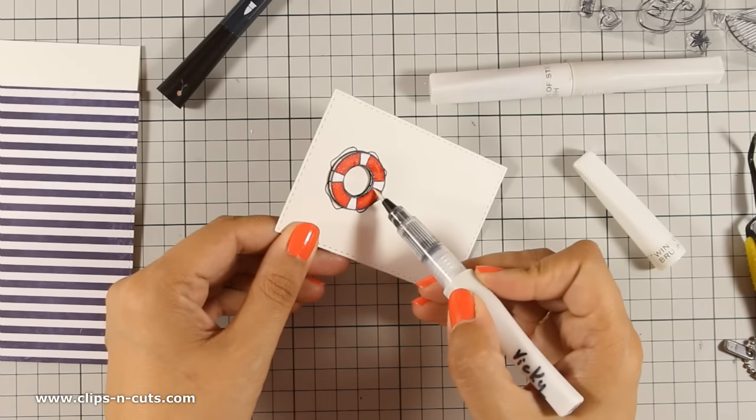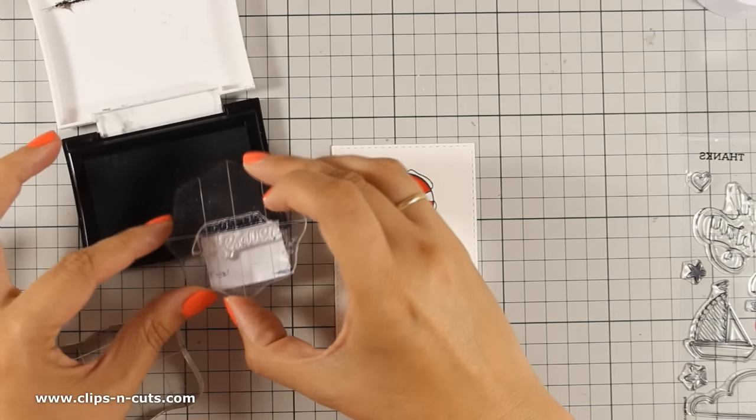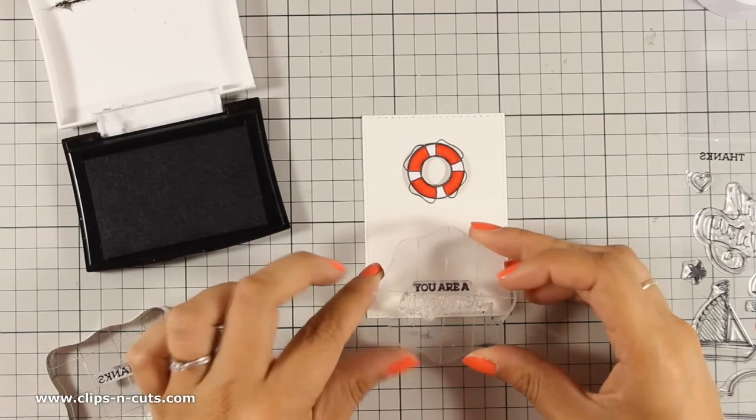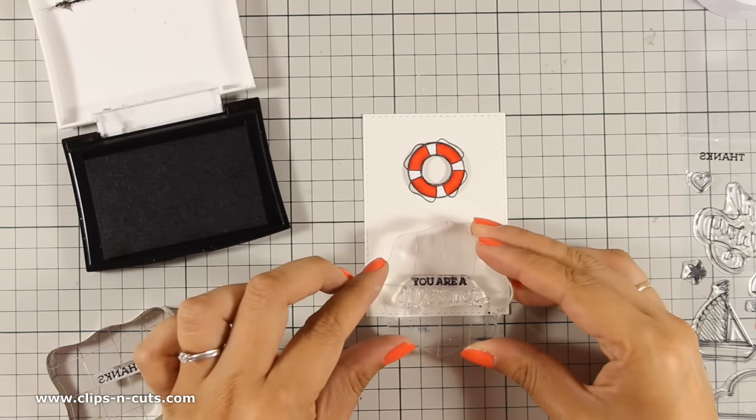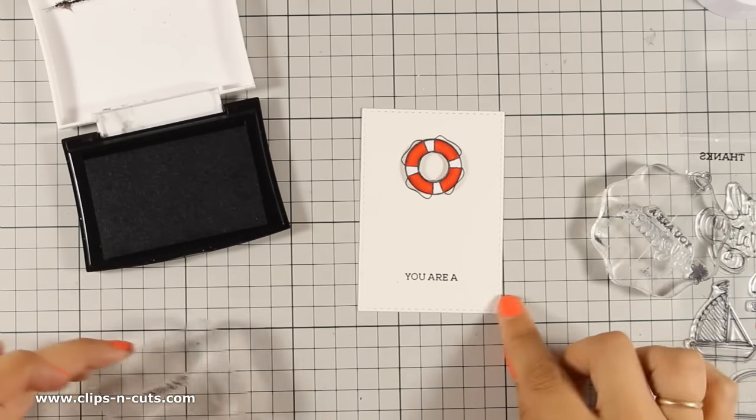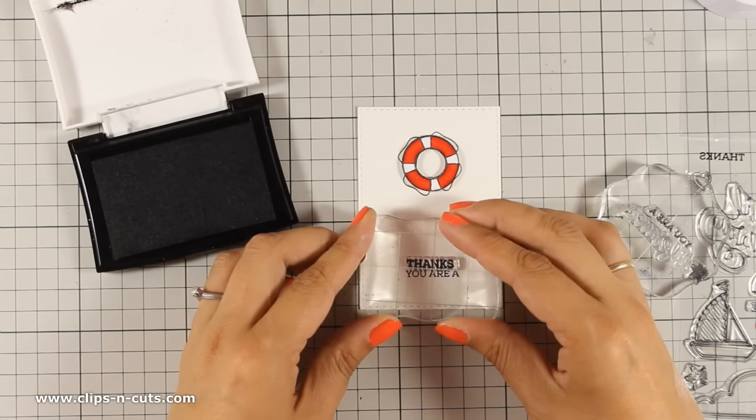For my card sentiment I will be using some sentiments that are included in the stamp set that's in the kit. So first of all I am using the one that says you are a lifesaver but I am going to stamp only the phrase that's on top, so that's u-r-e, and I am also going to stamp the word thanks.